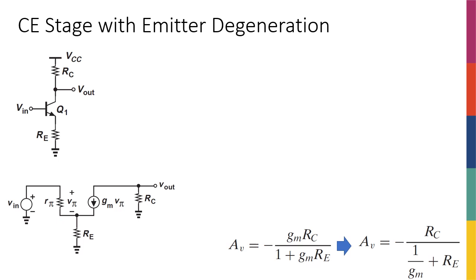Up to now we have been talking about the common emitter stage, and now I'm going to talk about a very important variation — so important that I decided to call it a different type of amplifier. Remember we said we have three and a half types of amplifier: common emitter, common collector, and common base. With common emitter, you could have a normal common emitter, or you could have the common emitter with emitter degeneration.